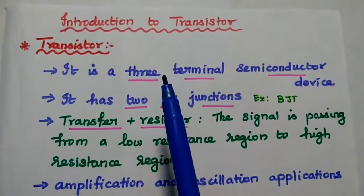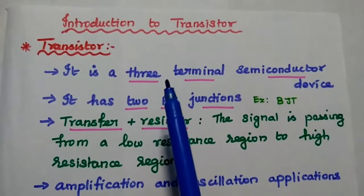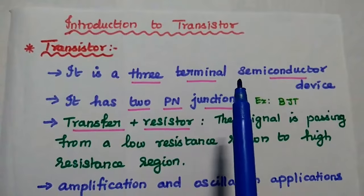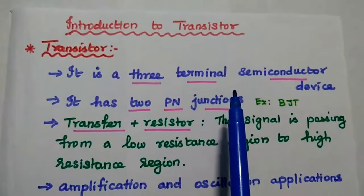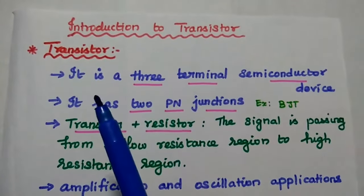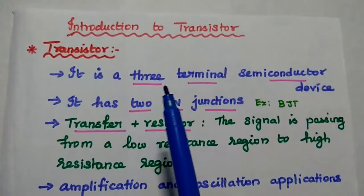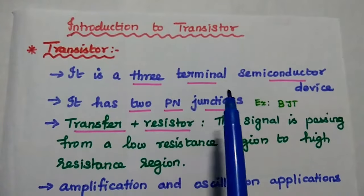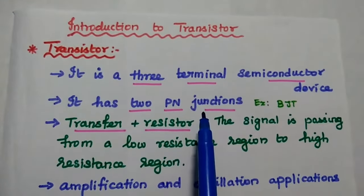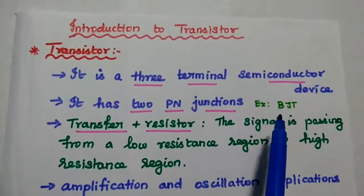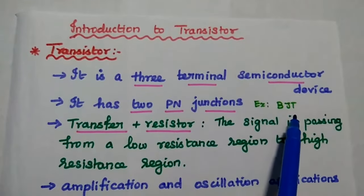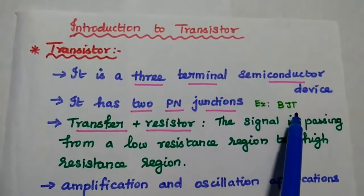Dear students, now we are going to discuss transistor, its types and comparison between BJT and FET. Transistor is a three terminal semiconductor device. It has two PN junctions — for example, bipolar junction transistor, i.e. BJT.